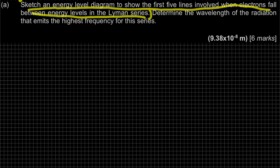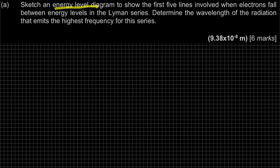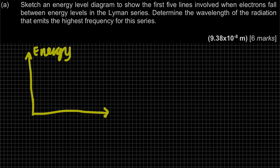So that's the first part of the question. What is an energy level diagram? An energy level diagram is where your y-axis is your energy, and your x-axis is your energy level. Energy level is your N, or we call it our shell. But usually for atomic model, we label it as energy level. So what we're going to draw is we have to show different energy levels.